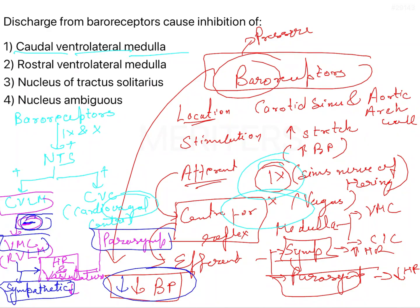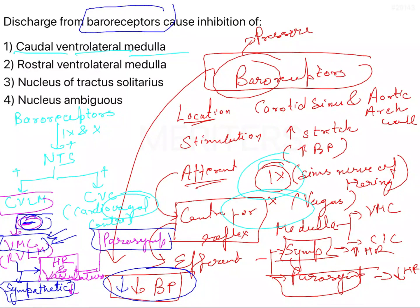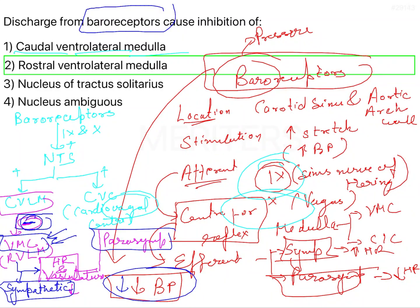So, discharge from baroreceptors causes inhibition of the vasomotor center, which is the rostral ventrolateral medulla (RVLM). The answer to this question is the second option: rostral ventrolateral medulla.